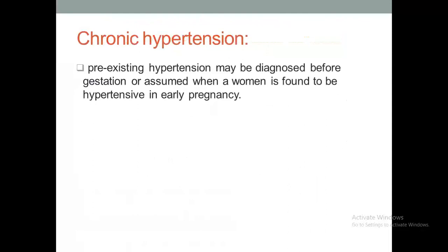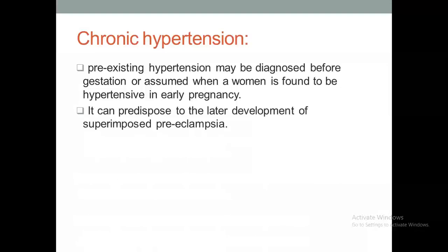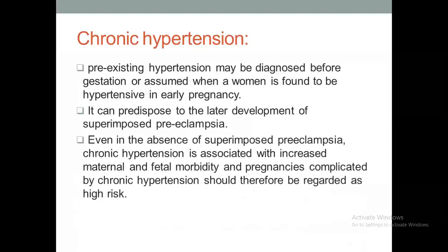Chronic hypertension is pre-existing hypertension diagnosed before pregnancy or when a woman is found hypertensive in early pregnancy before 20 weeks, whether or not proteinuria is present. It can predispose to superimposed preeclampsia. Even in the absence of superimposed preeclampsia, chronic hypertension is associated with increased maternal and fetal morbidity, and such pregnancies should be regarded as high risk.